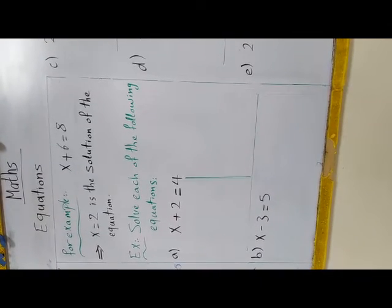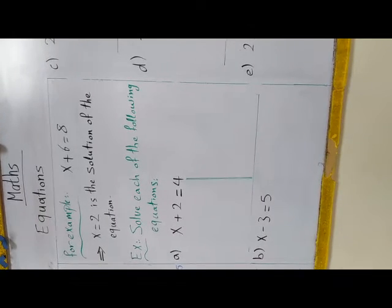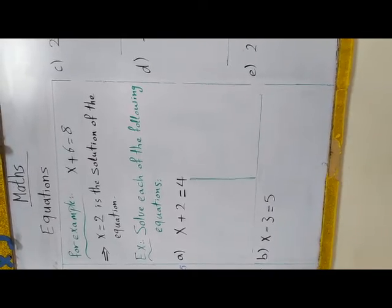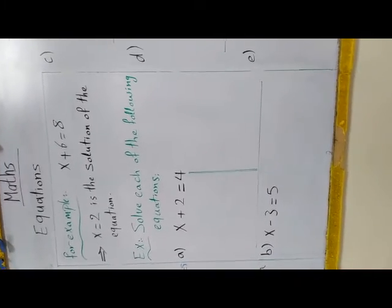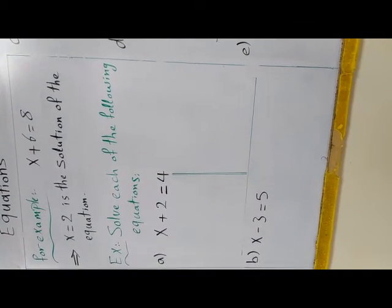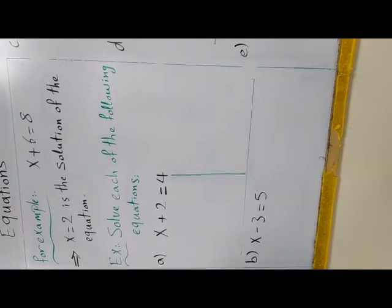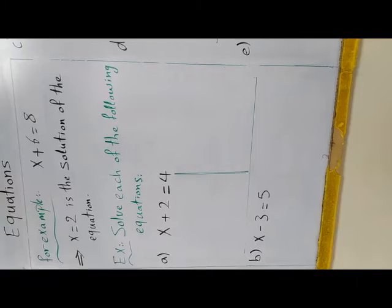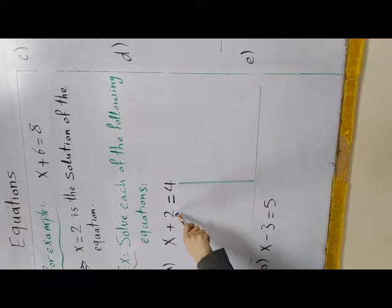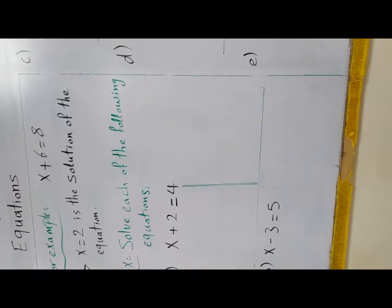Let's solve some exercises about the equation. Letter A: x plus 2 equal 4. How can we solve that equation? I have two methods. The first one is that I want to put x alone on one side. To do that, I look at the number beside x, which is plus 2.